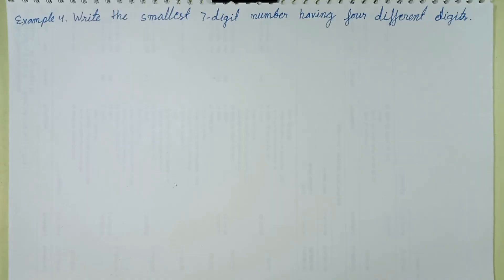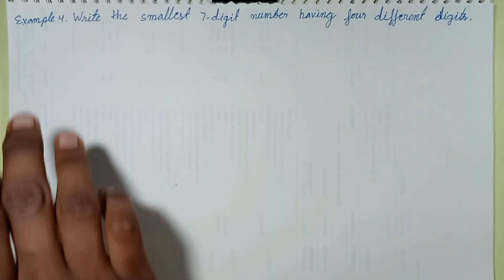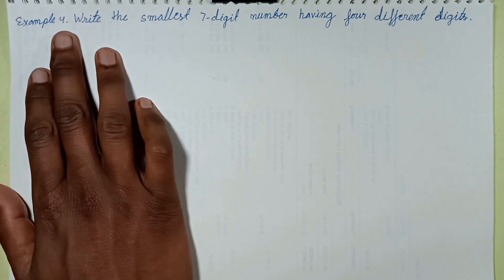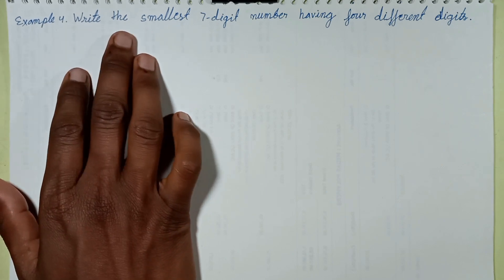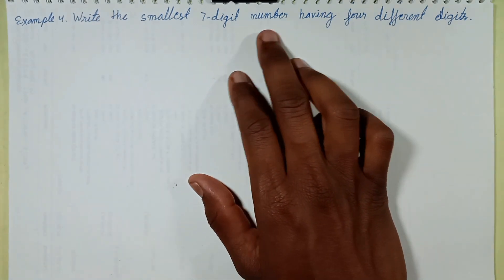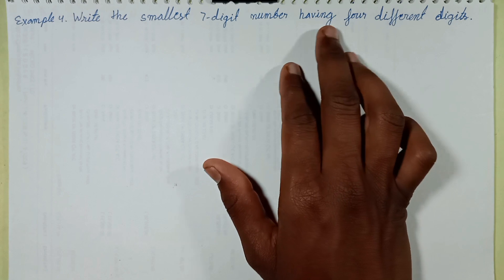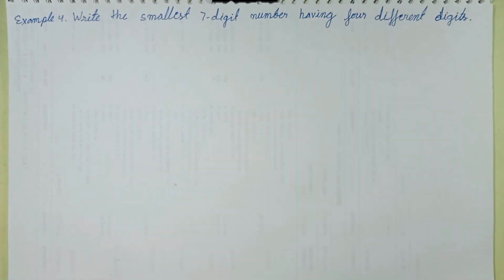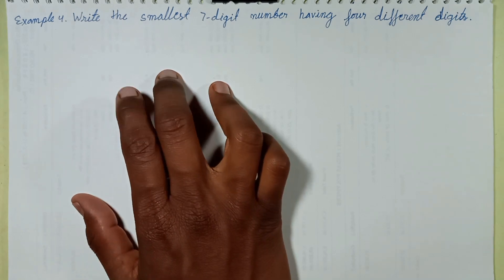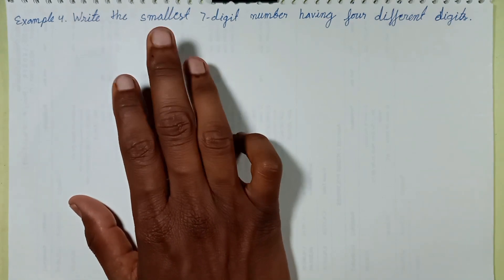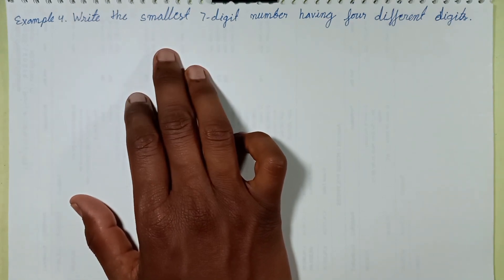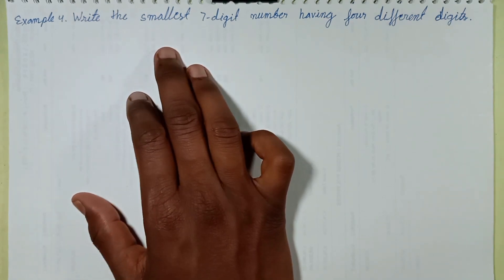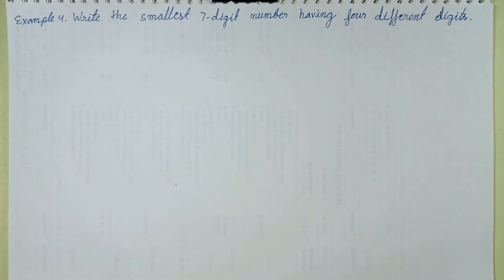Welcome back to this episode. This episode discusses example number four: write the smallest seven digit number having four different digits. This question belongs to R.D. Sharma mathematics for class six. Let's solve it.